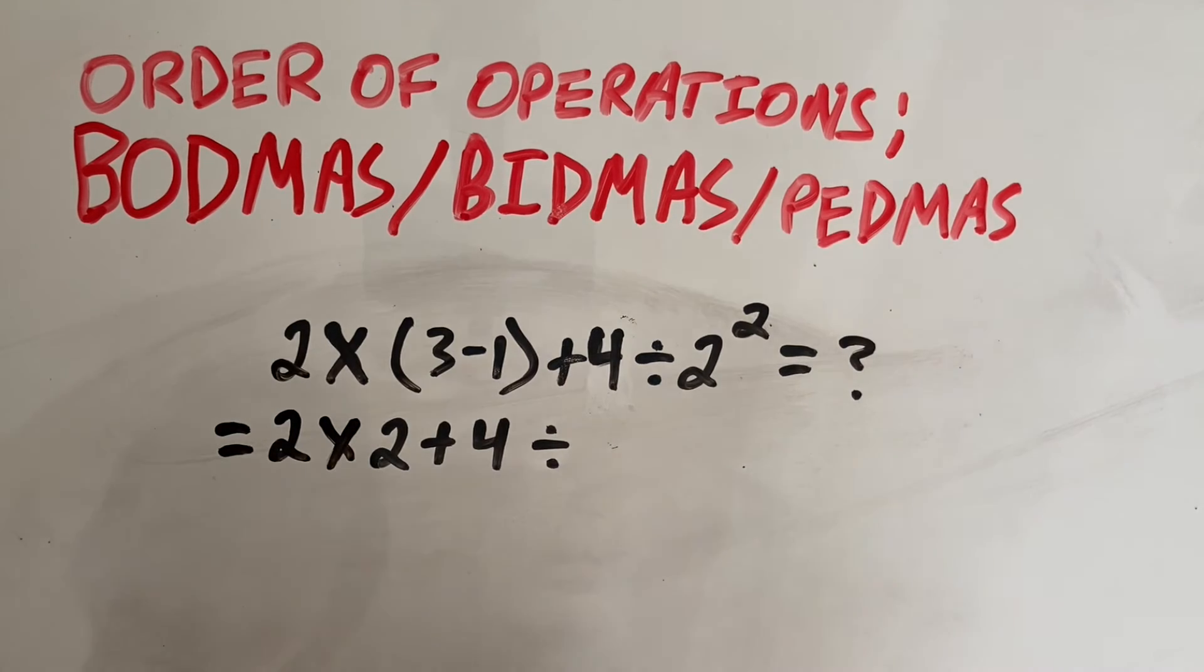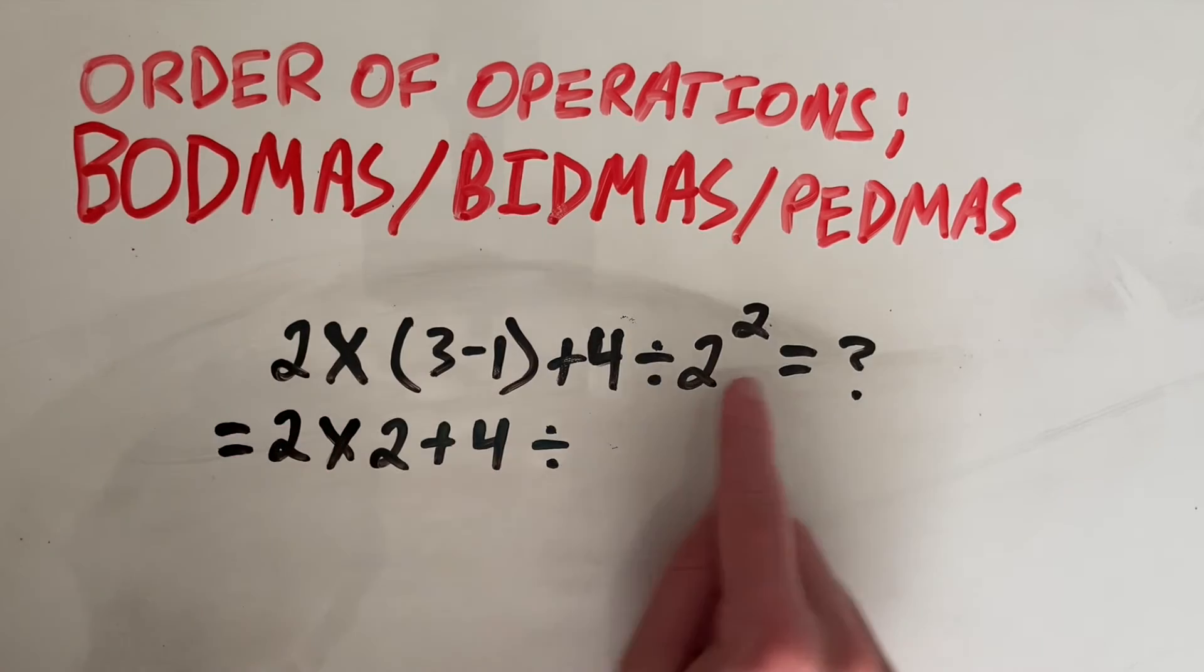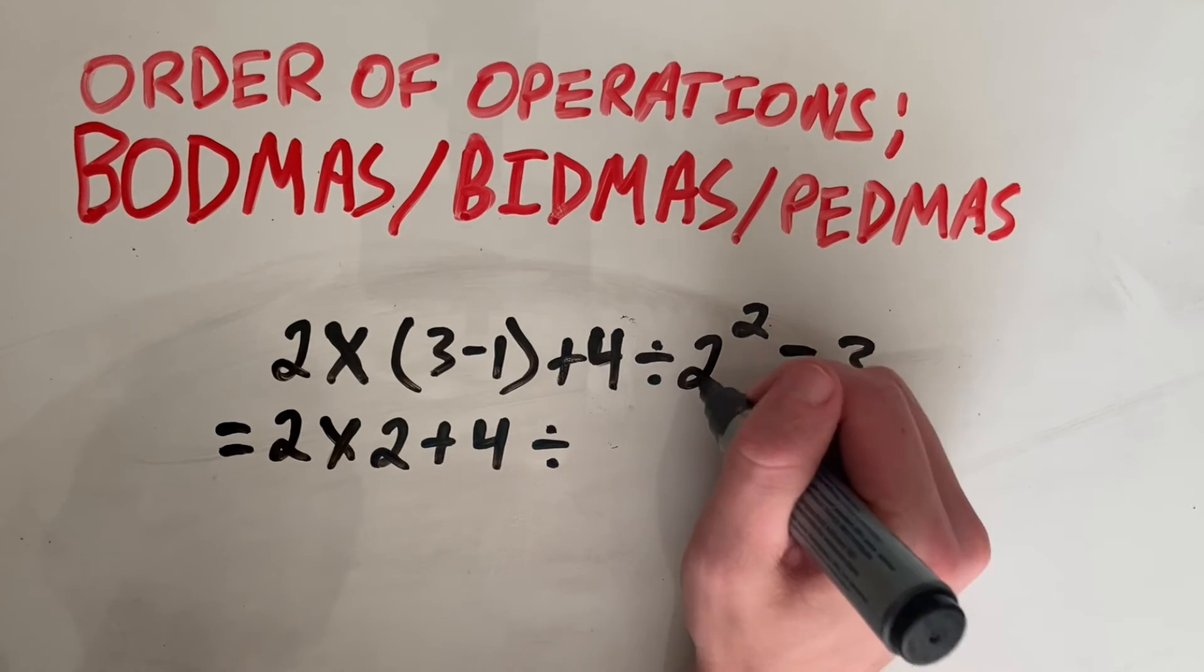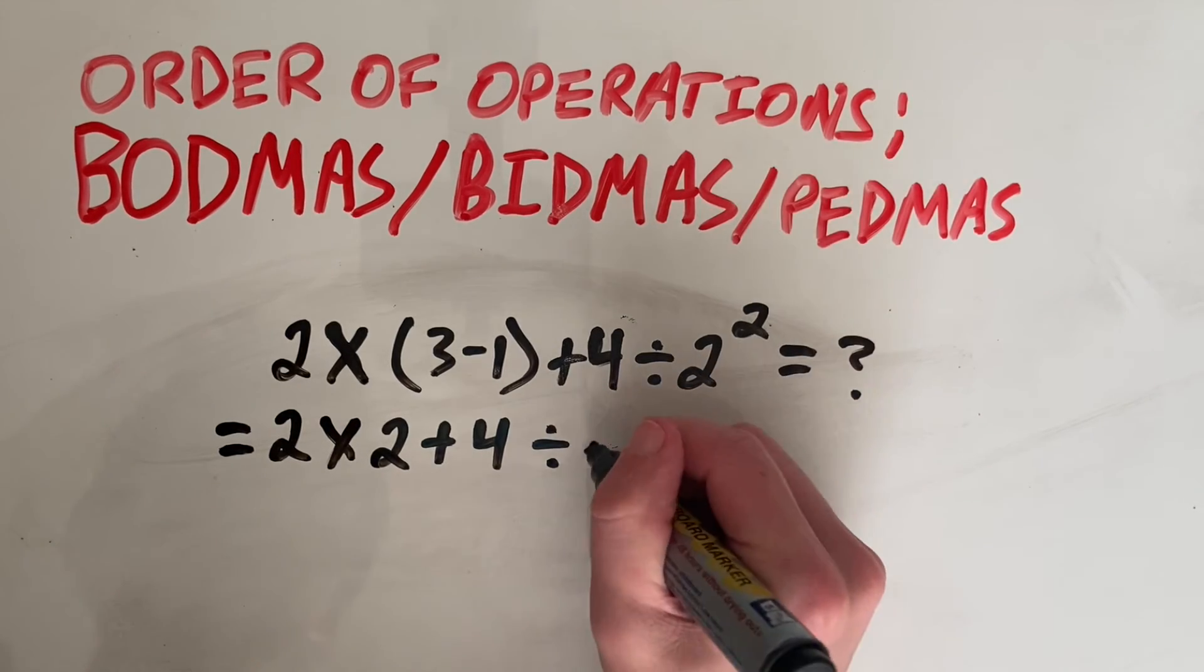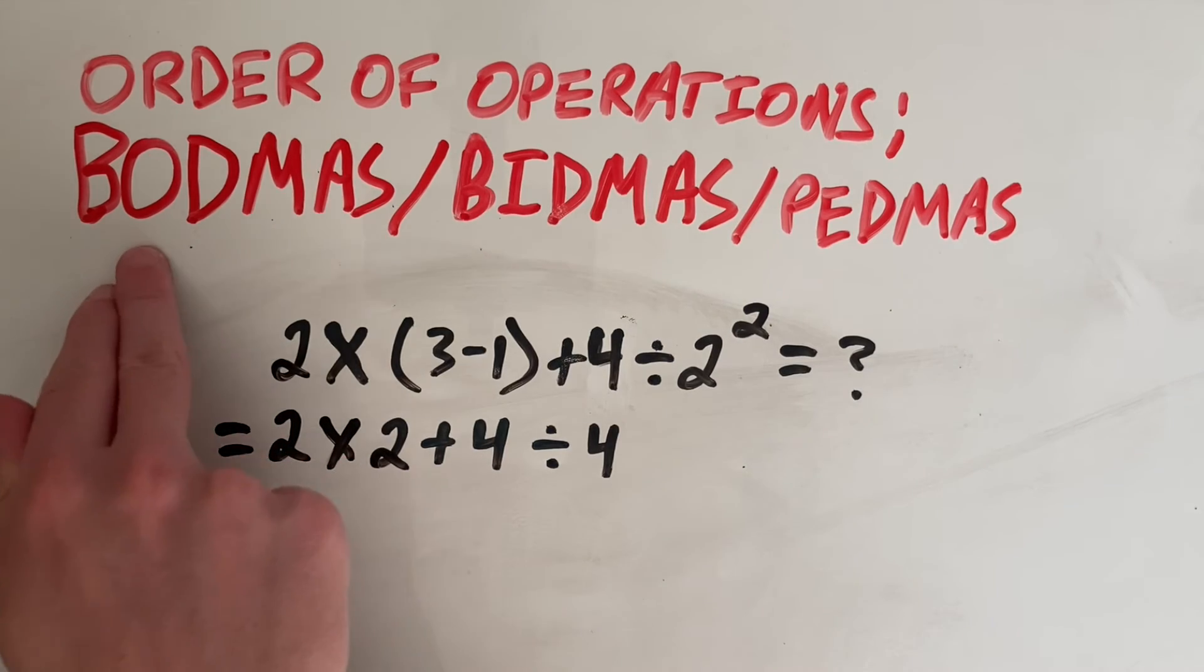However, as you get better, you can start doing multiple steps in one go. So we see we have done our bracket, which means our next step is our indice or our exponent or our order. So that power of. So we can go ahead and do that in the same step. So 2 to the power of 2 is 4. So we've done our first two operations.